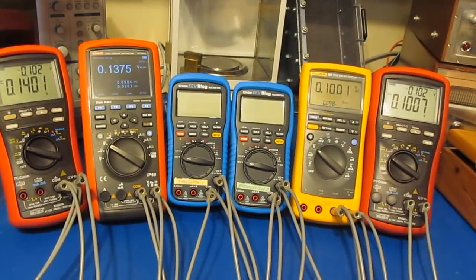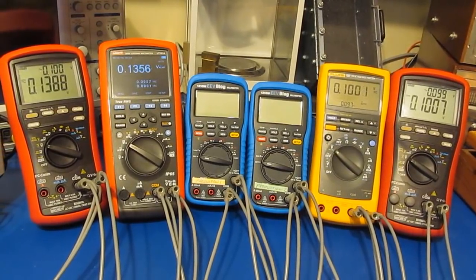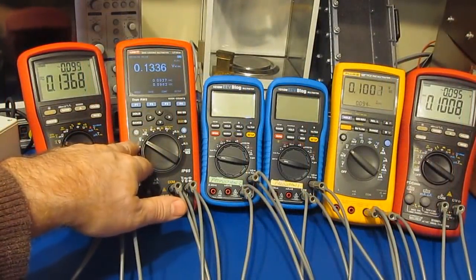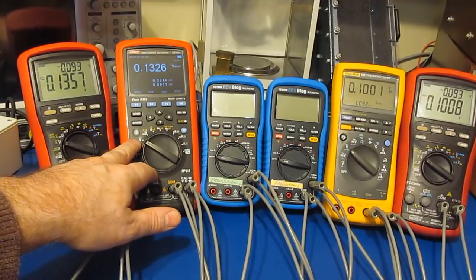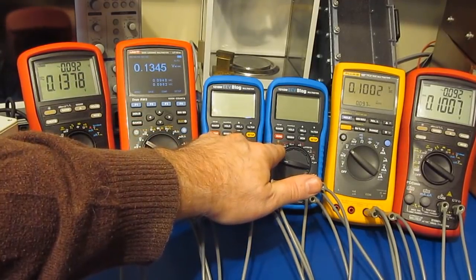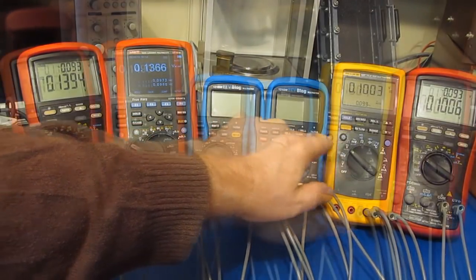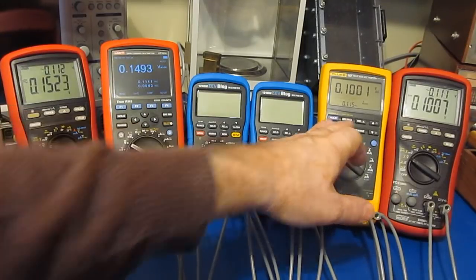The two meters on the outside are my Brymen BM869S's. To the right we have the UNI-T UT181A, the two 121GW's, and then this is the Fluke 187.